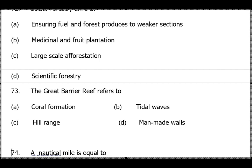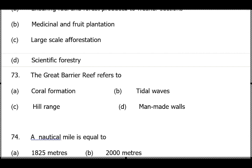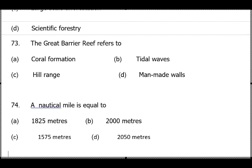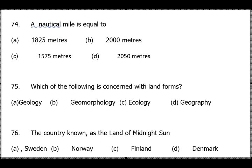Question 72: Social forestry aims at large-scale afforestation — planting more trees — option C. Question 73: The Great Barrier Reef is situated in Australia and is related to coral reef formation — option A. Question 74: One nautical mile equals approximately 1.85 km or 1852 metres — answer is option A. Question 75: Which study is concerned with landforms? Geomorphology — 'morph' means shape, covering the shapes of landforms — option B.